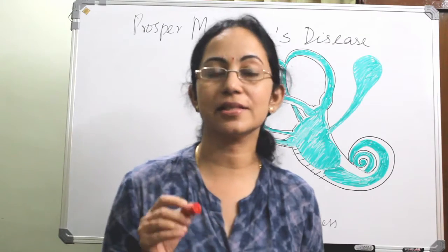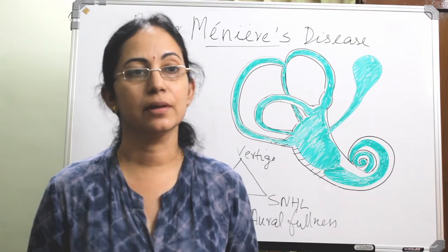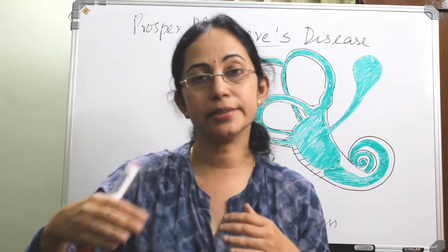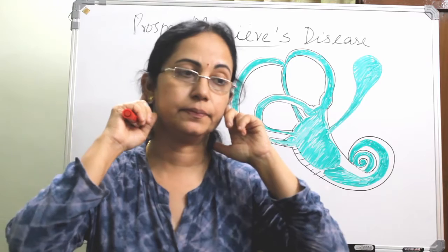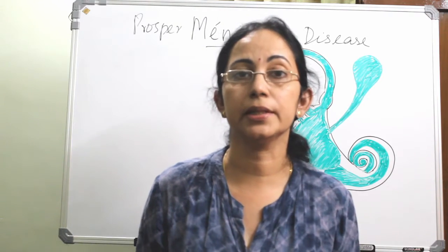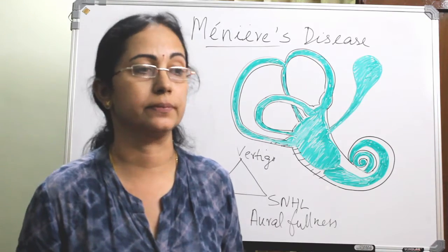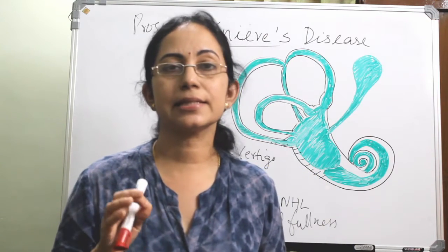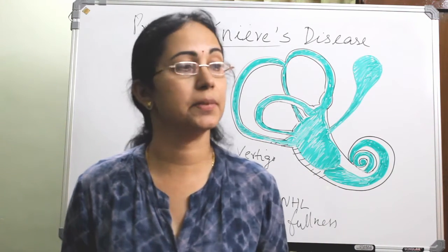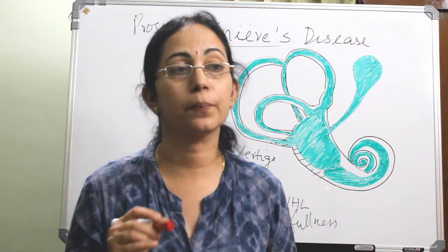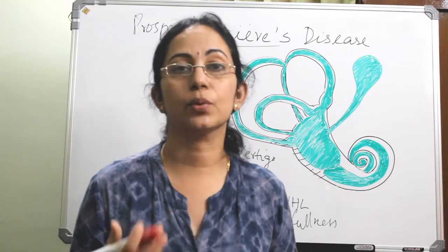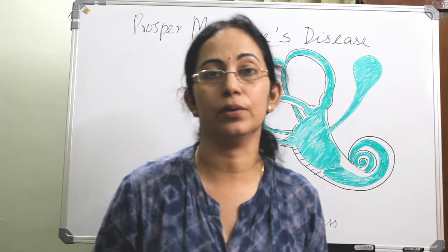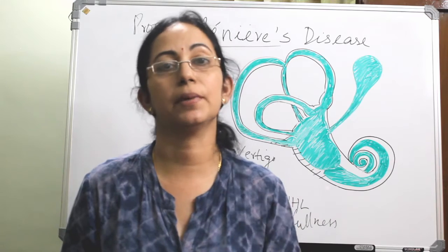Meniere's disease has been reported as early as 4 years of age, but it is common in the 30 to 60 age group. Usually it is unilateral, but at later stages it can affect both ears. Male to female incidence is almost equal, one to one. The exact etiology is unknown — like many diseases in medicine, it is primary with unknown etiology, and there are many hypotheses. Mostly it presents as secondary endolymphatic hydrops, secondary to some other conditions.